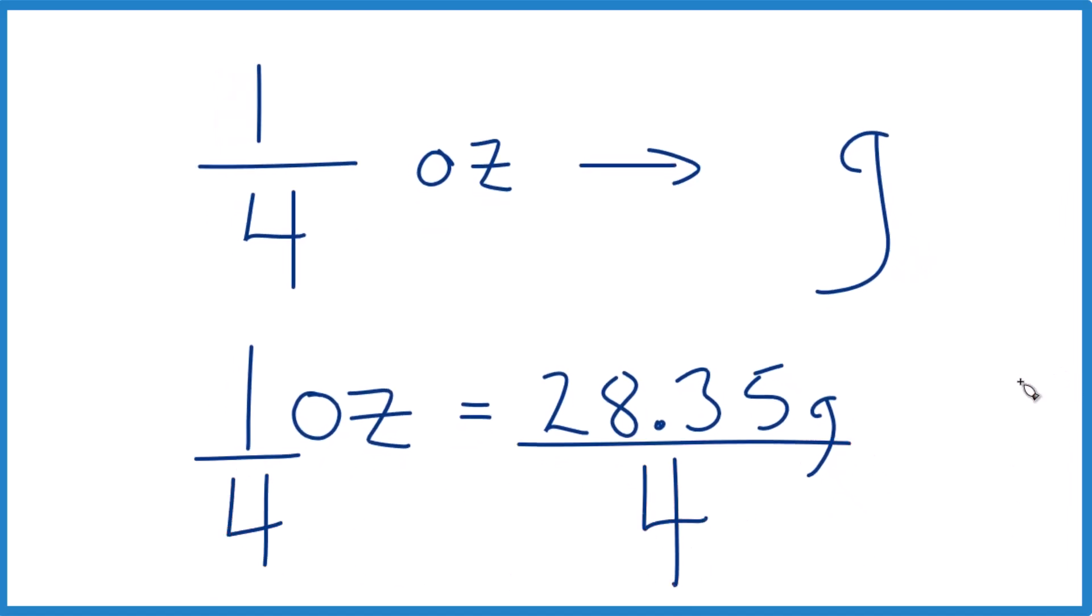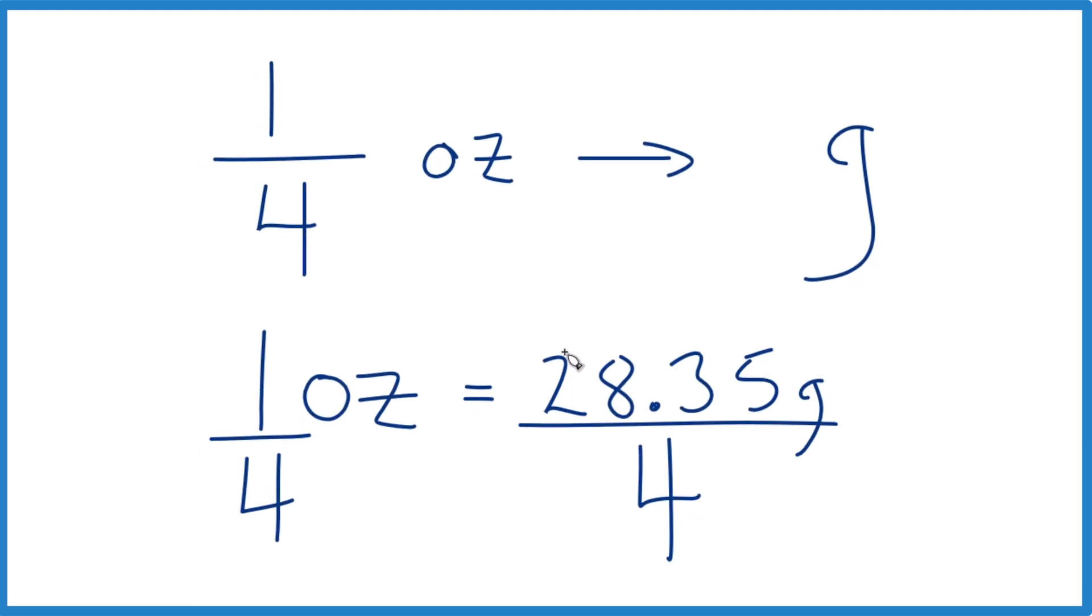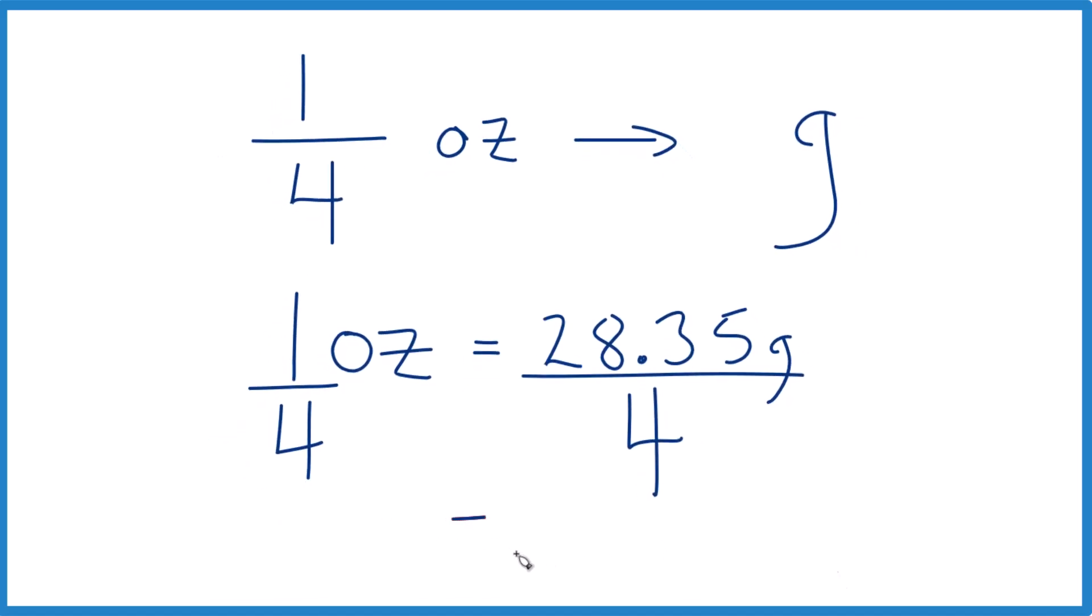Math, right? We did it to both sides. So when we divide 28.35 by four, four goes into 28 seven times. Then we end up with 7.0875. I'm going to call it 7.09, and that is going to be the grams.